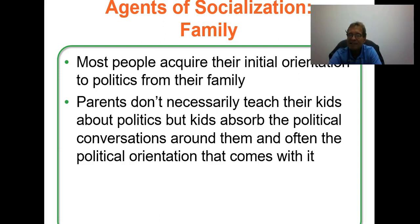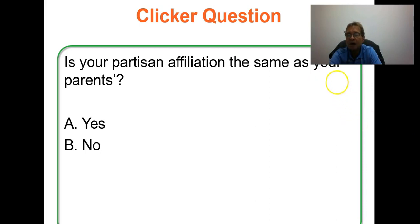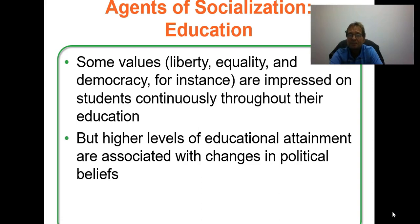Parents don't necessarily teach their kids about politics, but kids absorb conversations around them and often identify the orientation of those conversations. My father was very conservative; my mother tends to be more liberal. As you become more educated, your affiliation — whether you're a Democrat or Republican, liberal or conservative — may change over time, or it may remain the same as your parents'. Higher levels of educational attainment tend to be associated with changes in political beliefs.